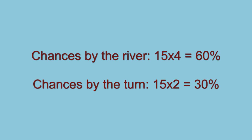So with our example, if we wish to work out our chances by the river, it would simply be 15 times 4, which is 60%. Or on the turn, 15 times 2, which is 30%.